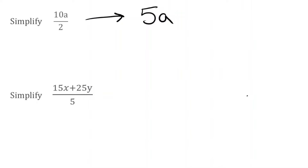We can work this question back to front to check if we've got the answer correct. If I just did divide by 2 to give me 5a, then doing it back to front — if I took that 5a and multiplied it by 2, we'd have 5 multiplied by 2 is 10, and then we put our a back. So 10a is back to what we started with.